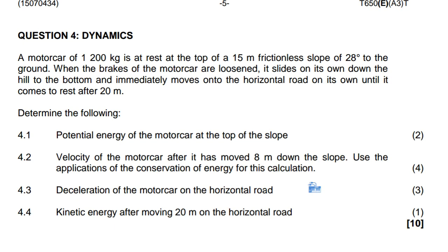A motor car of 1200 kg is at rest at the top of a 15-meter frictionless slope of 28 degrees to the ground. When the brakes of the motor car are loosened, it slides on its own down the hill to the bottom and immediately moves onto the horizontal road on its own until it comes to rest after 20 meters.